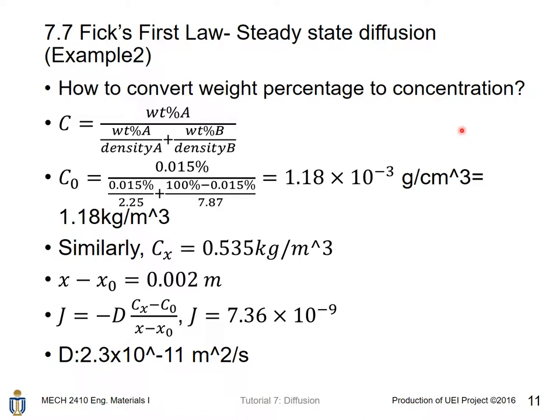The weight percentage is used for the carbon density. So, we need to convert the weight percentage to concentration, the normal unit for concentration. Using an equation from the textbook, concentration equals weight percentage of species A over (weight percentage of species A over density of A plus weight percentage of species B over density B).